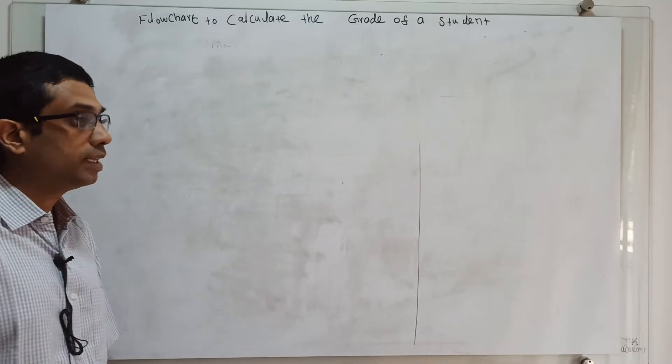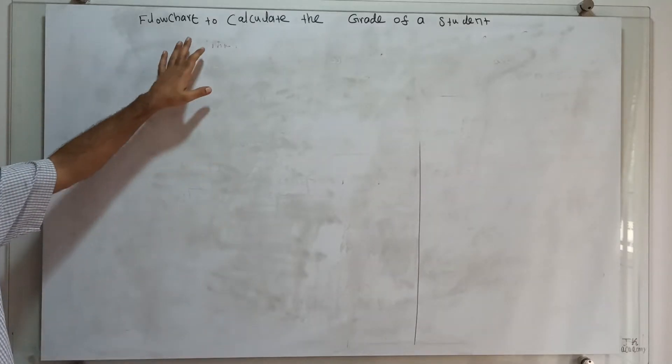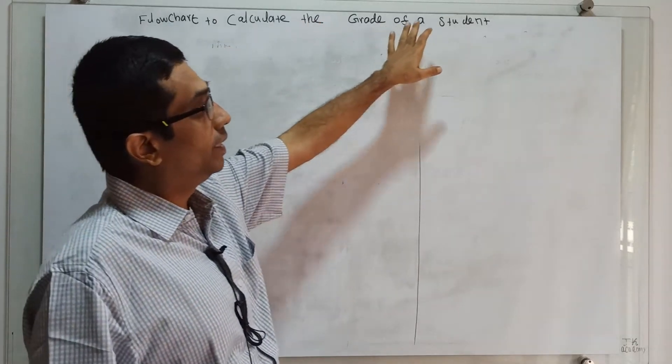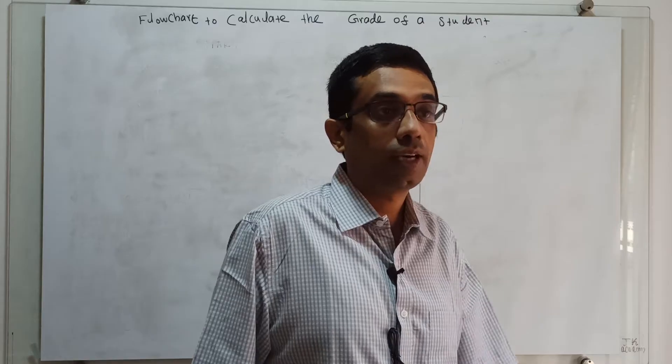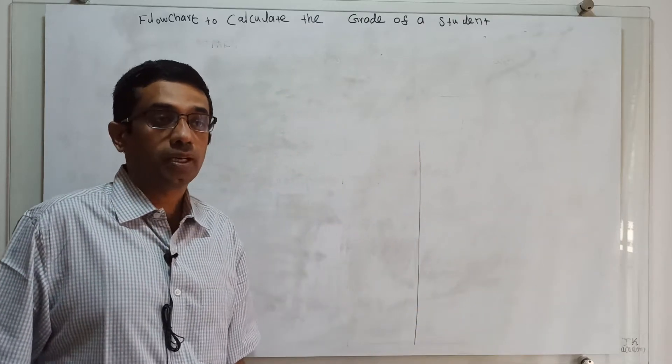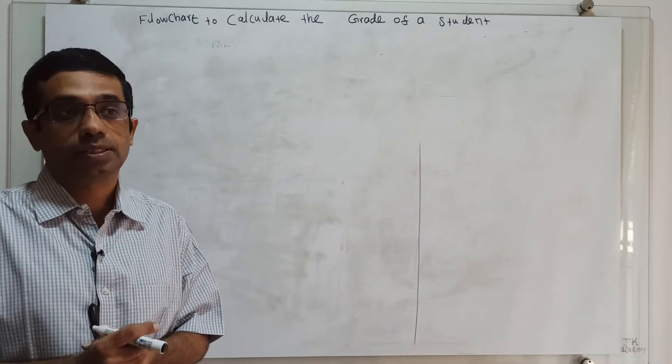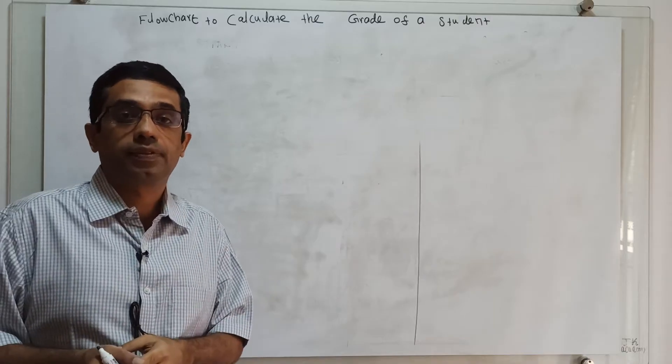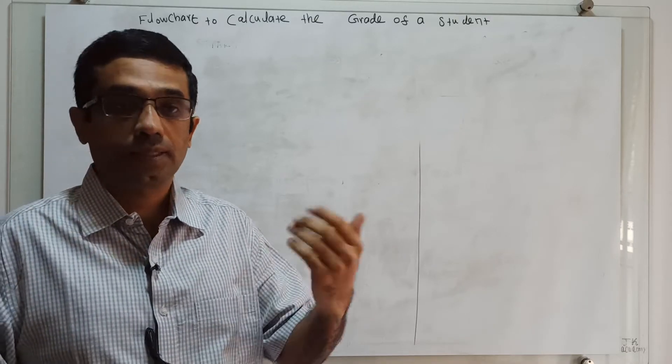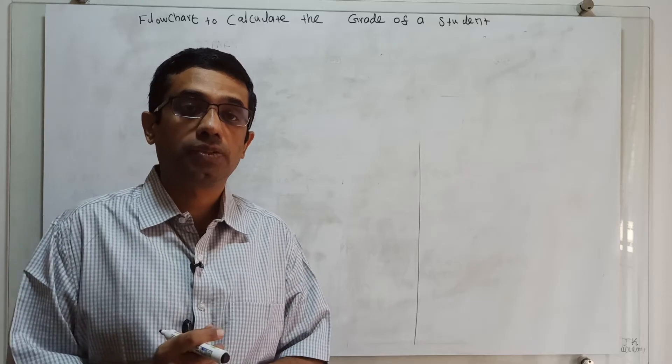Hi friends, welcome to the video lecture on flowchart to calculate the grade of a student. We have to obtain five subjects marks and find the average. If the average is greater than 50, we assign a grade as pass, or we assign a grade as fail. So for this, we are going to draw a flowchart.